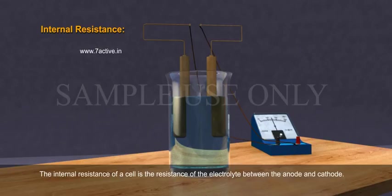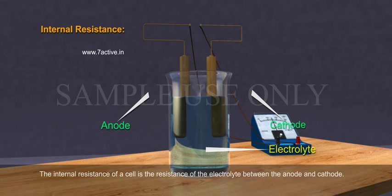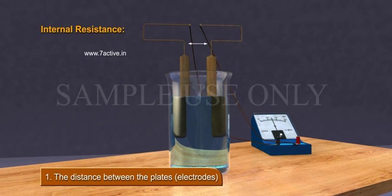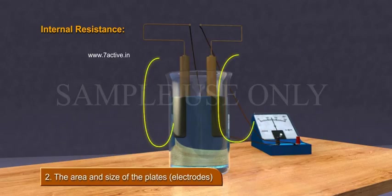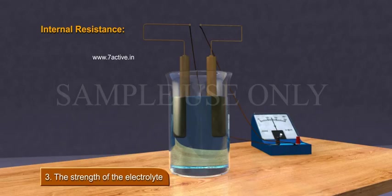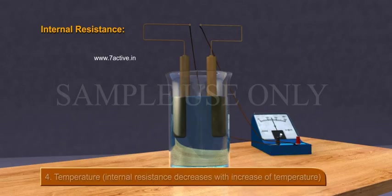Internal resistance depends on: one, the distance between the plates or electrodes; two, the area and size of the plates or electrodes; three, the strength of the electrolyte; and four, temperature.